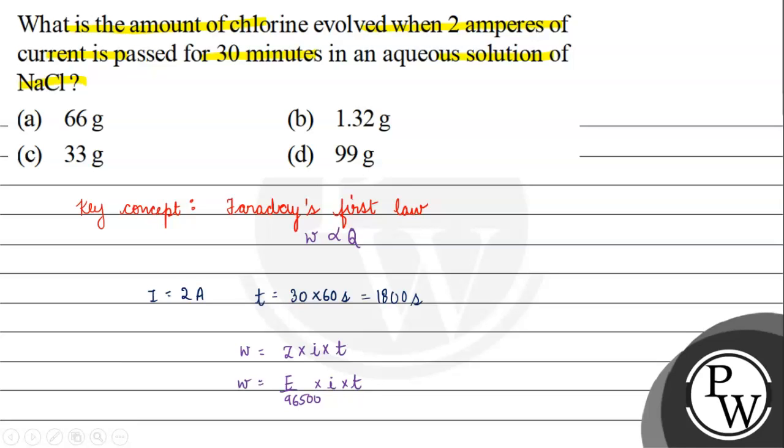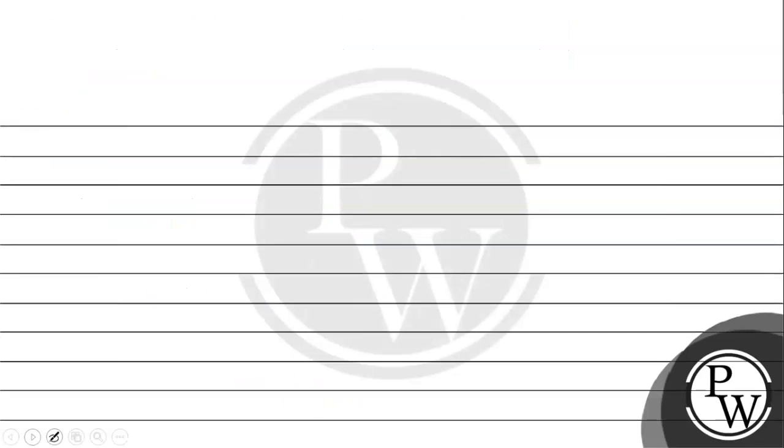We need to find the amount of chlorine. Two chloride ions will form Cl₂ and give 2 electrons, right?